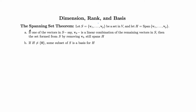In part A: if one of the vectors in S — say vk — is a linear combination of the remaining vectors (for example, if there are ten vectors and the seventh is a linear combination of the other nine), then the set formed by removing vk from S still spans H. The span will be the same even if we remove vk.